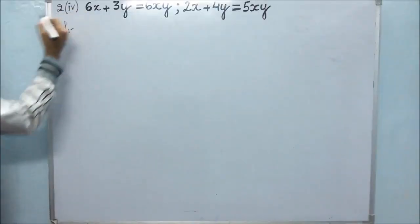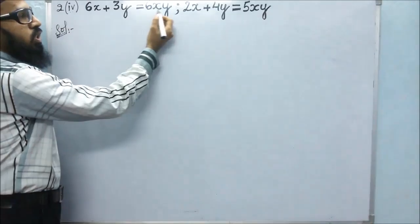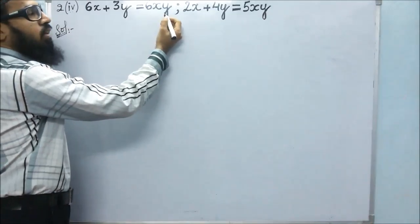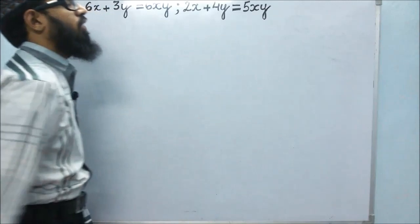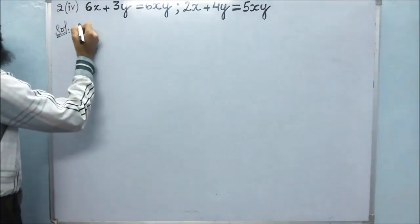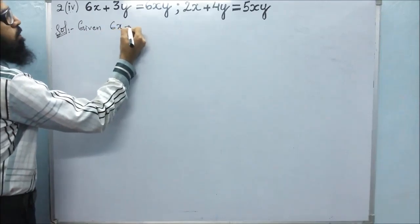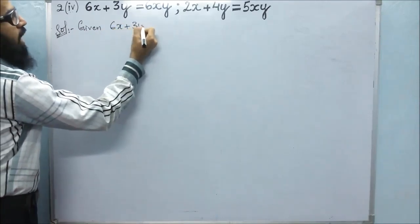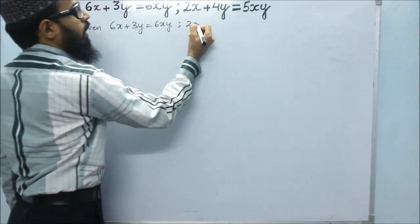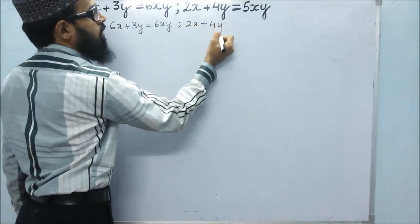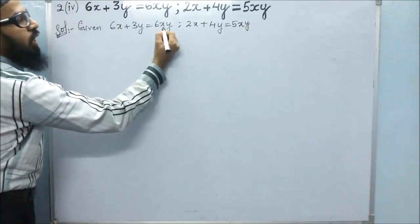In the fourth bit of the second problem, they have given that 6x plus 3y is equals to 6xy, and the other equation is 2x plus 4y is equals to 5xy.